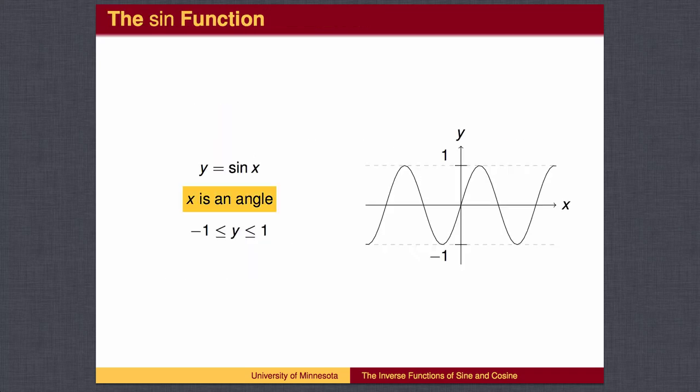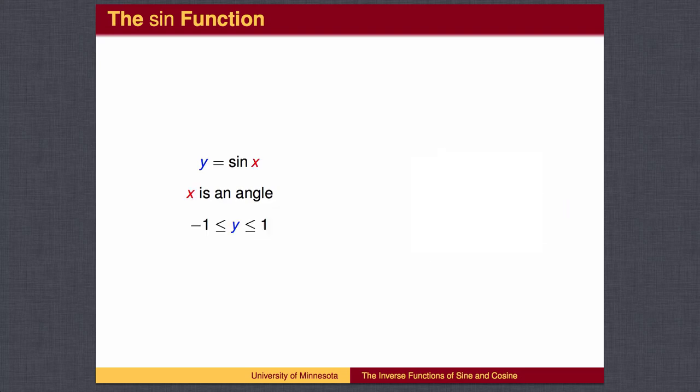The sine function has as its input an angle and has as its output a number between negative 1 and 1. We can create the inverse of the sine function by reversing the roles of the input and the output.